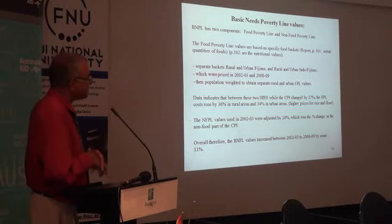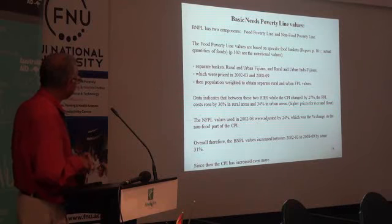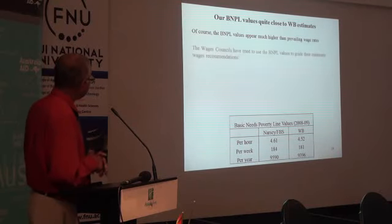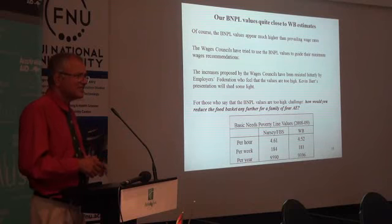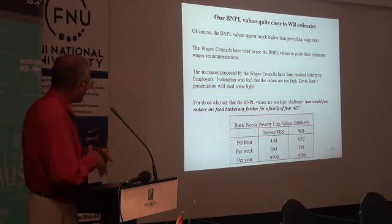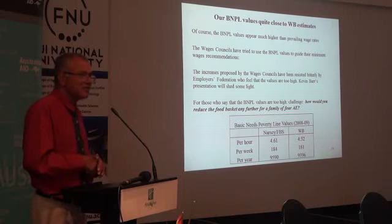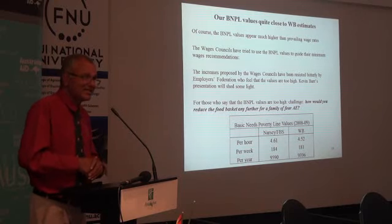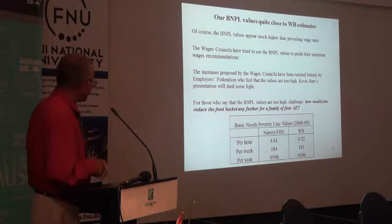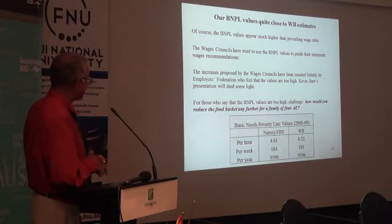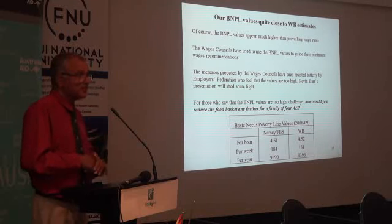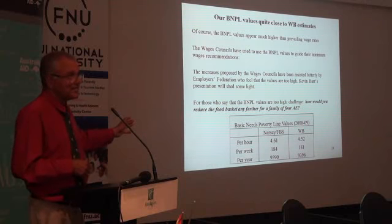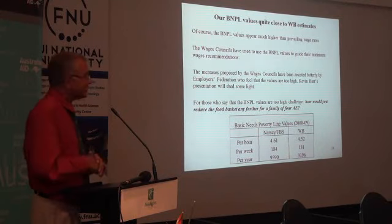We've got values for the basic needs poverty line, and I'm putting in a comparison with the World Bank estimates. The World Bank used a very different methodology to derive their basic needs poverty lines — I don't particularly agree with their method — but we came up to pretty much the same values. Remember, this is for 2008–9, which is three years ago. We're looking at wage rates of $4.60, $4.50 an hour — pretty close together. Per year, that's about $9,500 or $9,300. Father Barr has been trying to get wage rates up to way less than that, and he hasn't succeeded.